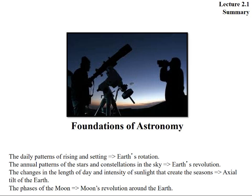Once again, I would like to repeat. The rising and setting of the Sun or the daily patterns you see are due to Earth's rotation. The annual patterns of stars and constellations that move around the sky are due to Earth's revolution. The axial tilt of Earth is the reason for seasons, and moon's revolution around Earth causes different phases of moon like crescent moon, new moon, full moon, etc.